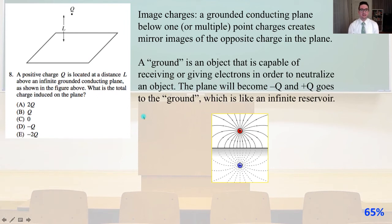Number eight. A positive charge q is located at a distance l above an infinite grounded conducting plane. What is the total charge induced on the plane? Image charges.